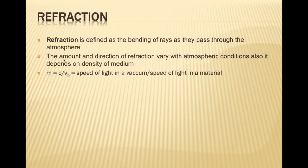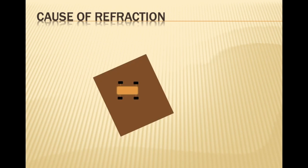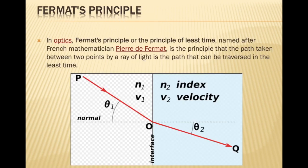The formula for this is m = c / v_p, where c is the velocity of light in a vacuum and v_p is the speed of light in the material. This whole formula depends upon the density of the medium.